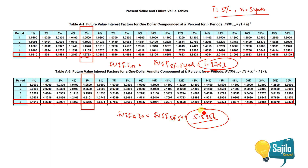Future value at 5% for 5 years: the future value interest factor is 1.27368. For the annuity, the answer is 5.5256.